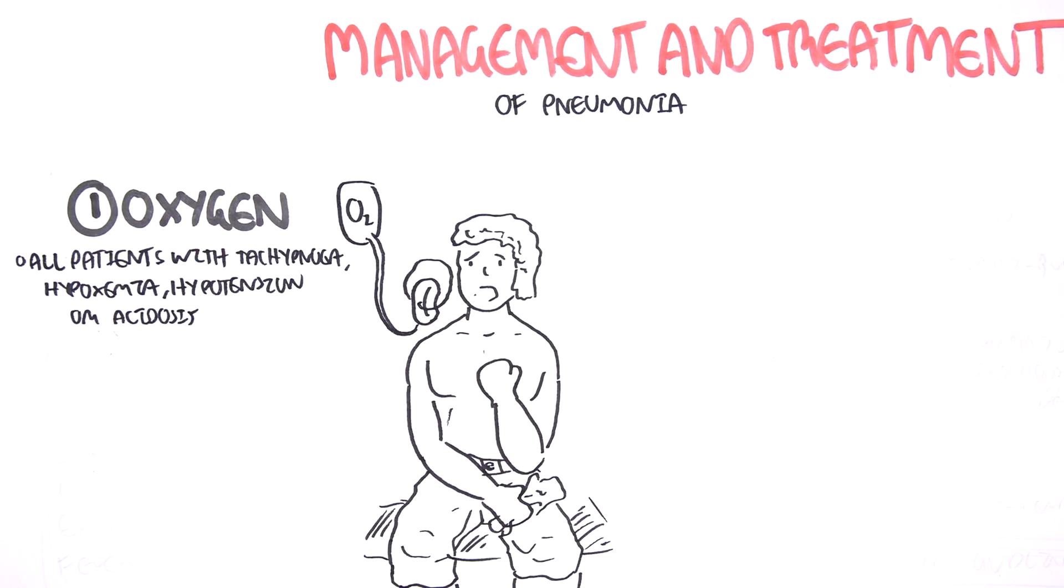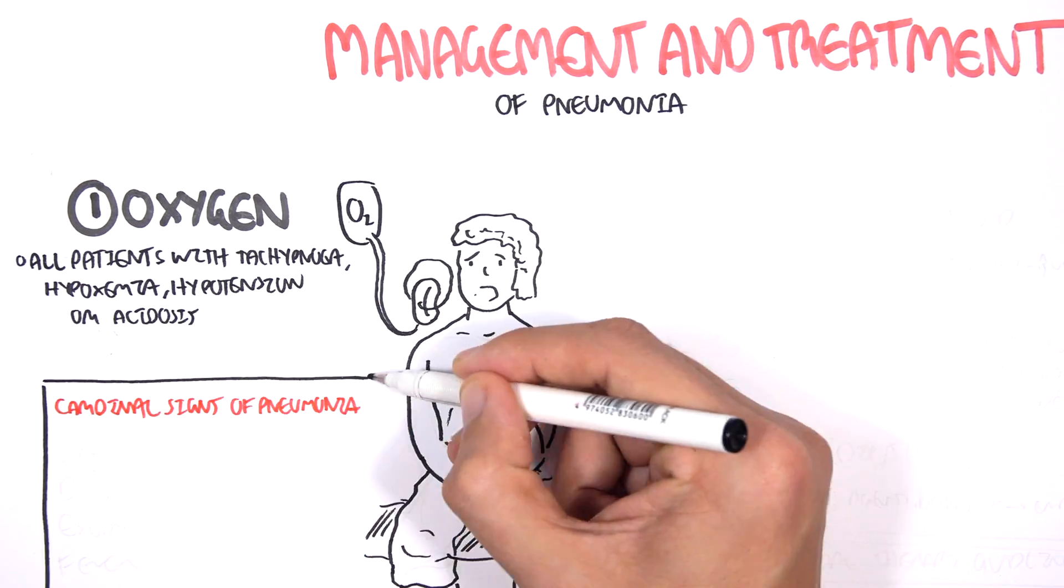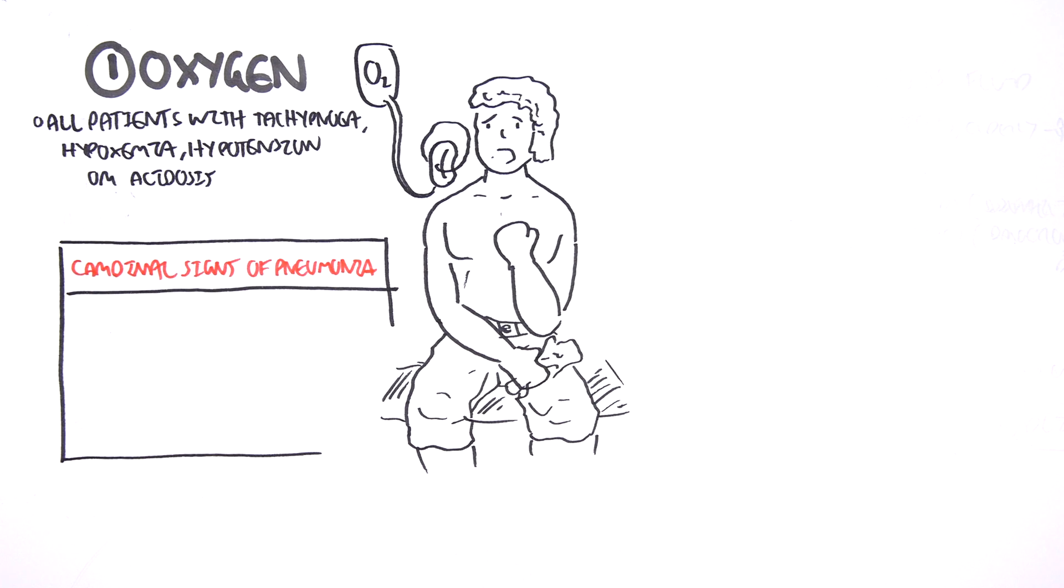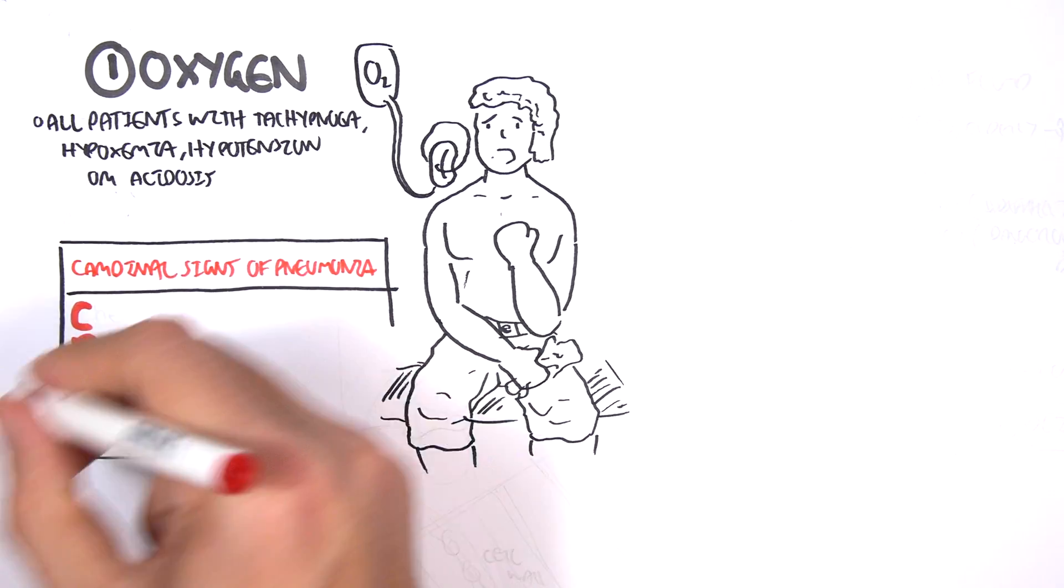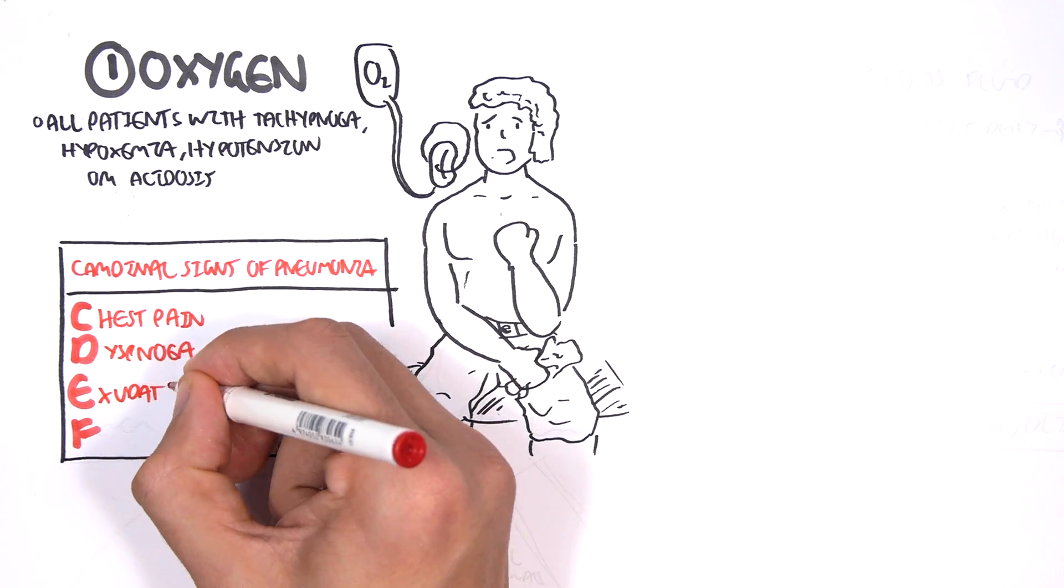Before looking at the other management, it's important to recap or know the cardinal signs of pneumonia. So the cardinal signs of pneumonia, if you can remember, we can remember it as CDEF. So C stands for chest pain, D stands for dyspnea, E stands for exudate, sputum, and F is for fever.